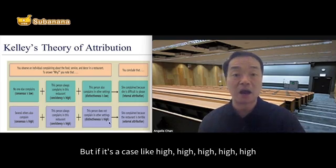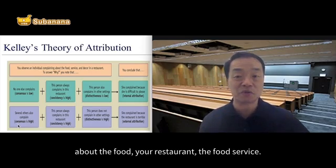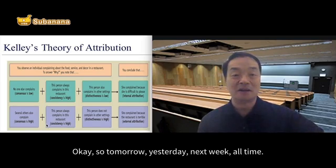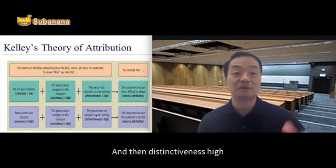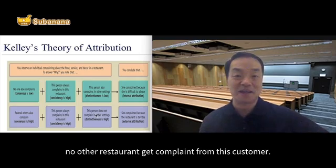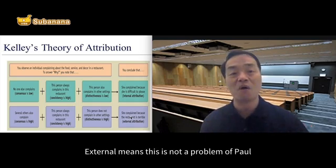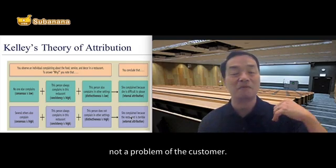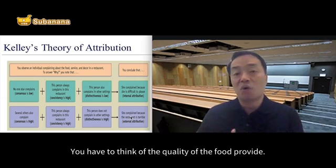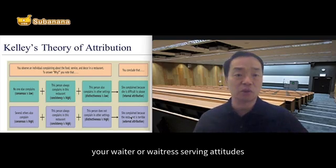But if the case is high, high, high — consensus high means almost everyone in your restaurant is complaining about the food and service. Consistency high means those people keep complaining over time — yesterday, today, next week, all the time. And distinctiveness high means only your restaurant gets complaints, no other restaurant in the city gets complaints from this customer. Then you will know this is not internal — this is external attribution. It's not a problem of Paul; it's a problem of your management, the quality of the food, and how you train your waiters and waitresses in terms of serving attitudes and abilities.